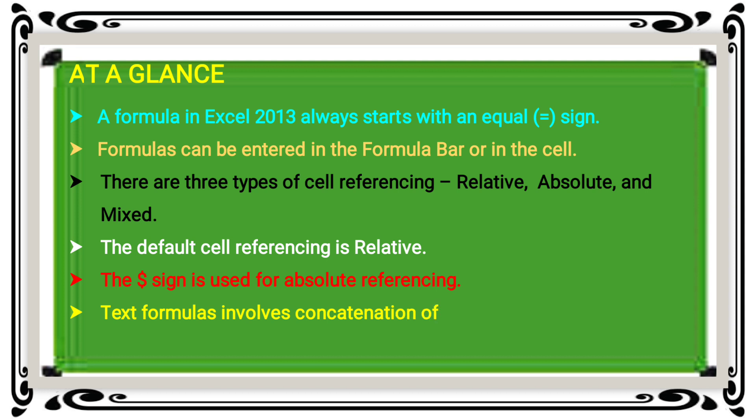Text formulas involve concatenation of text strings. In text formulas, to combine one or more text strings, you use concatenation operations in the formula. The exact strings are constructed, adding items to make a new string.